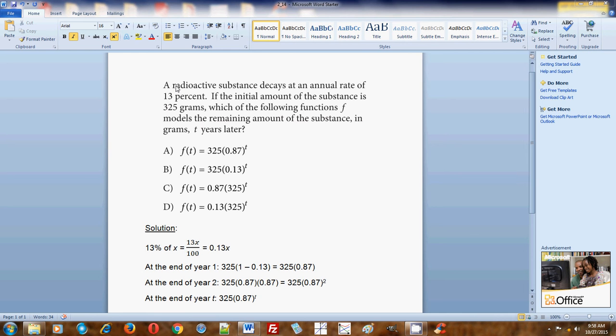It's reduced by 13% every single year. So whatever the amount of the radioactive substance this year, at the end of this year 13% of it will be gone, and that new amount will also decrease by 13% next year after that. This is how it works.